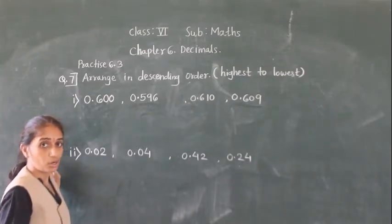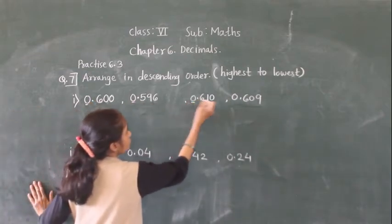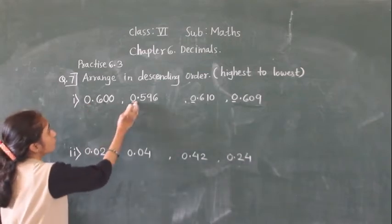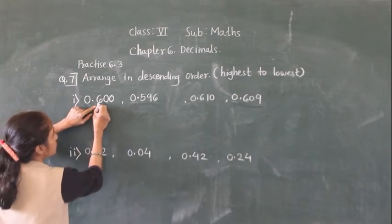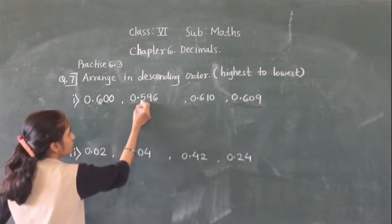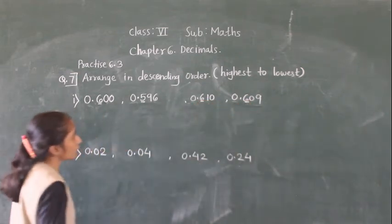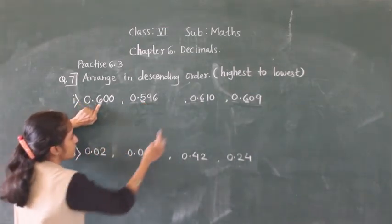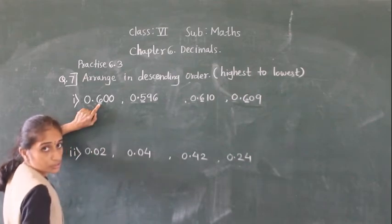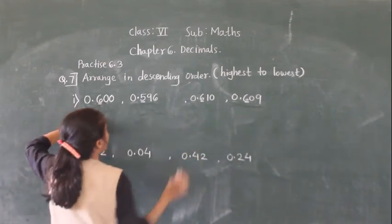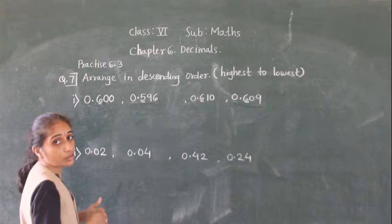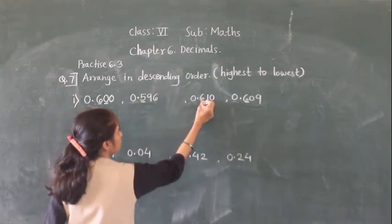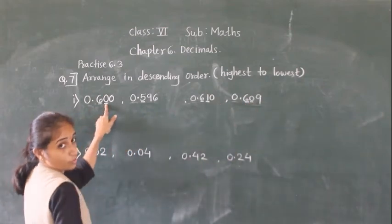Compare the numbers for descending order. The whole number part is 0 for all — same. Check the tenths place: here 6, here 5, here 6, here 6. So 5 is the smallest — that number, 0.596, will come last. The remaining three numbers all have 6 at the tenths place, so check the hundredths place. At the hundredths place: 0, 1, and 0. Since 1 is the greatest, 0.610 comes first.